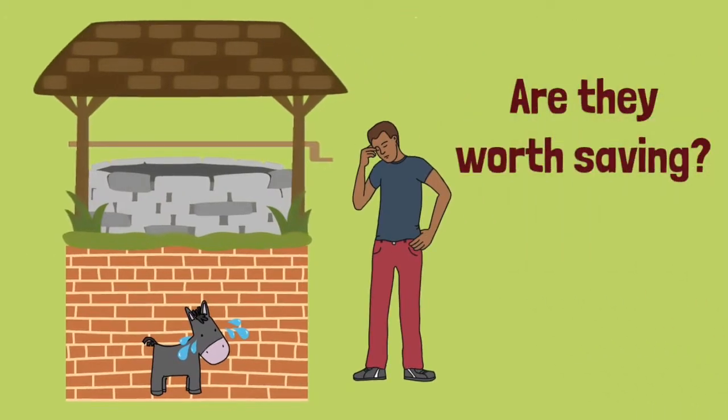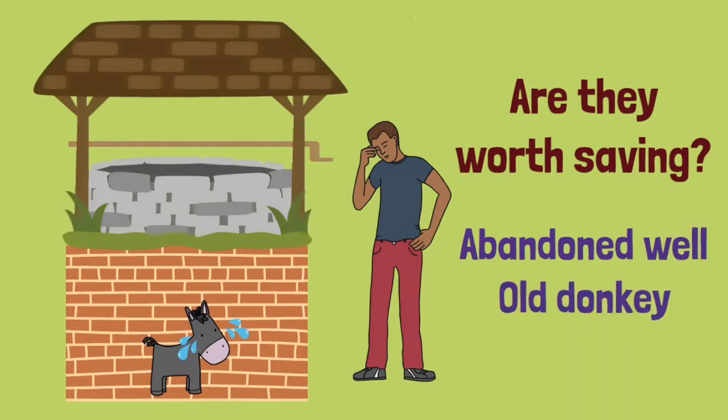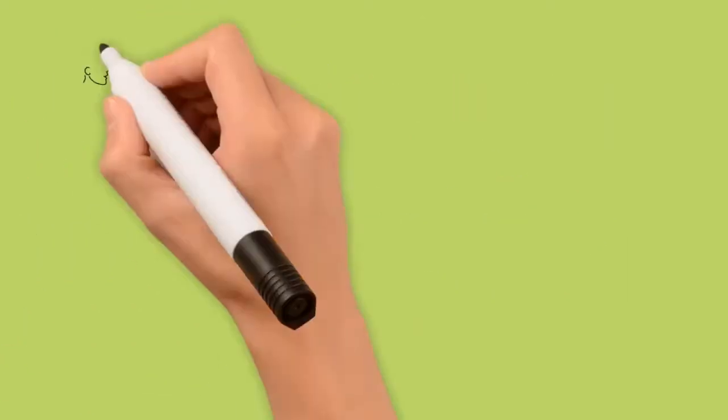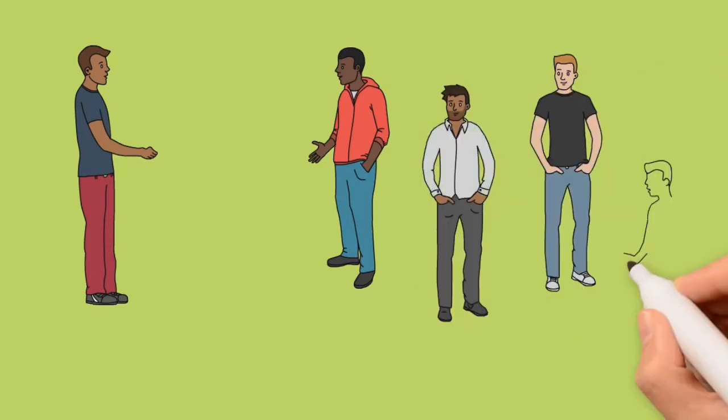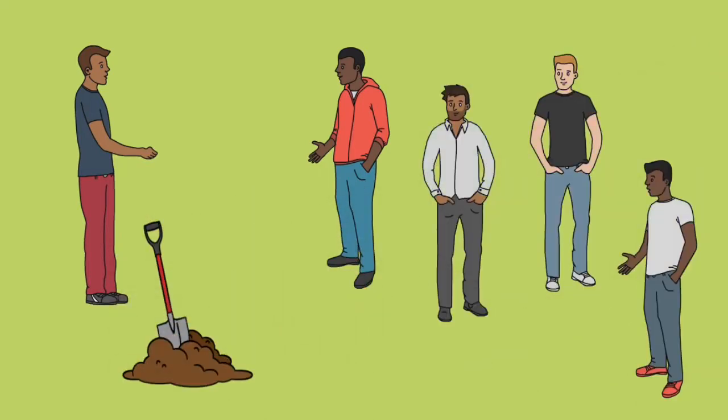In the end, the farmer decided that the well was not being used and the donkey was old, therefore neither was worth the trouble of saving. He called his neighbors to come and help him haul dirt to bury the donkey in the well and put him out of his misery.